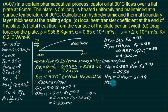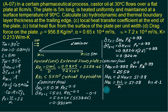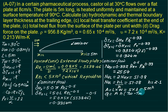The average Nusselt number Nu_L = h × L / k = 51.08. With L = 5 m and k = 0.213 W/mK, we calculate h = 2.0 W/m²K. The heat transfer area is length × width = 5 × 1 = 5 m². Heat transfer by convection Q = A × h × (Tw − T_infinity) = 5 × 2.0 × (90 − 30) = 636 watts.